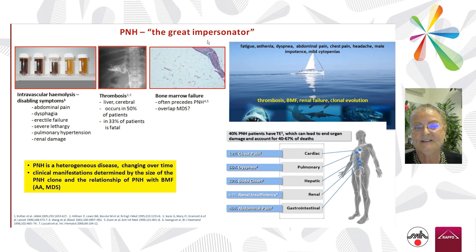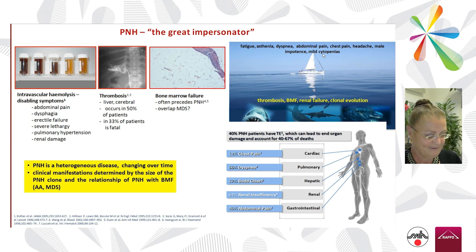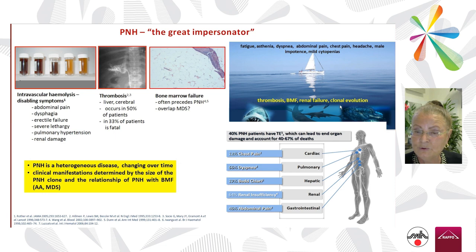Clinically, PNH is the great impersonator because it has so many symptoms that can look non-specific: fatigue, asthenia, dyspnea, abdominal pain, chest pain, headache, male impotence, and mild cytopenia. The physician can underestimate the disease, but underneath the calm surface there are thrombosis, bone marrow failure, renal failure, and possible clonal evolution — these are really very harmful PNH complications.